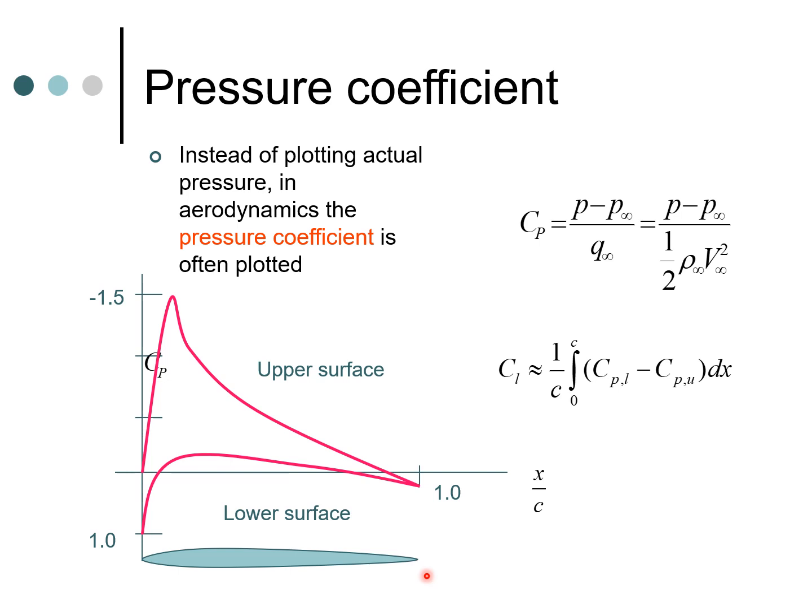Why Cp is important is because you can quickly calculate the lift coefficient by using Cp. We are going to discuss lift coefficient later in the course, but essentially Cl is approximately 1 by C integral 0 to C, and then it is Cp lower surface minus Cp upper surface. This whole value into dx is summed up across the entire region on the airfoil from 0 to C, and that gives us the lift coefficient for the airfoil.